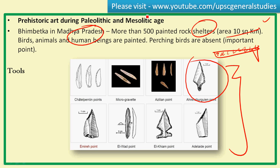These hunting scenes were probably painted before going for actual hunting as a ritual — they would symbolically kill the animals in the painting, hoping to replicate the kill in real hunting. Another important observation from Mesolithic paintings is the absence of perching birds, which shows that agriculture was not present at that period, since perching birds subsist on food grains.